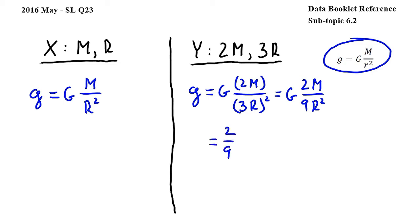We get 2 over 9 times Gm over r squared. Comparing the gravitational field strength at X and at Y.